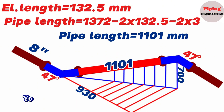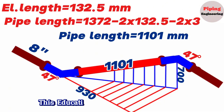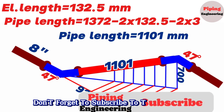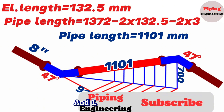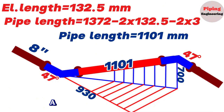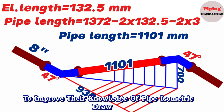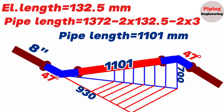By using this method, you can easily calculate pipe section lengths in any pipelines. This education video is finishing here. If you found this video useful, don't forget to subscribe to the channel and like the video. By becoming a member of our channel, you can support us and benefit from some features. If our viewers write in the comment section to improve their knowledge of pipe isometric drawings, we can send them additional PDF files. We're very happy to embark on this educational journey with you. Thank you for visiting the Piping Engineering YouTube channel. I'll see you next time.